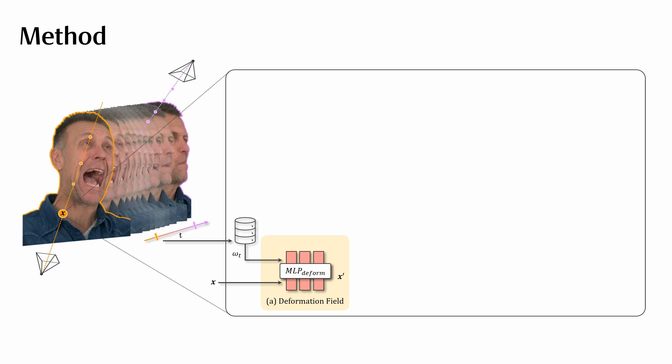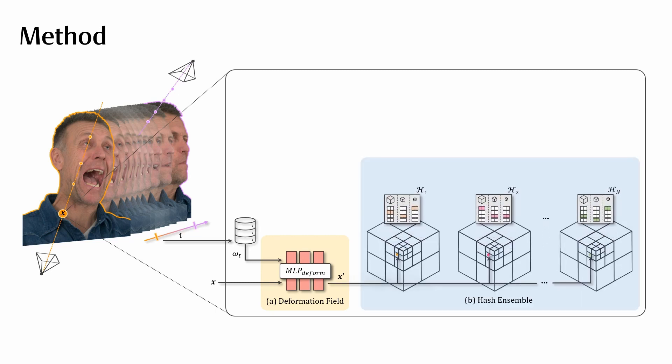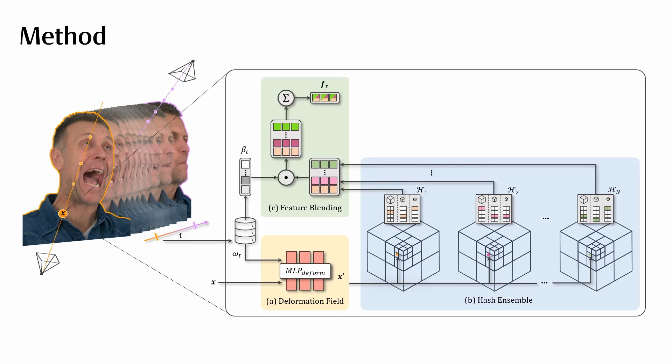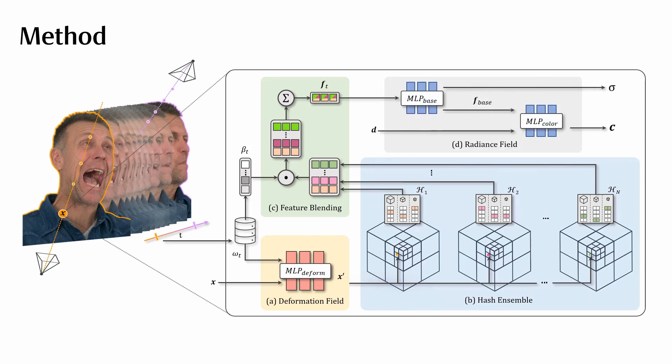We use the point's canonical location to query an ensemble of multi-resolution hash encodings to get meaningful spatial features. We then fuse these features with learnable time-dependent blend weights. This enables us to decompose the scene at each time step into a unique combination of hash encodings. The blended features are then fed into two tiny MLPs that decode them into density and color values for volumetric rendering.